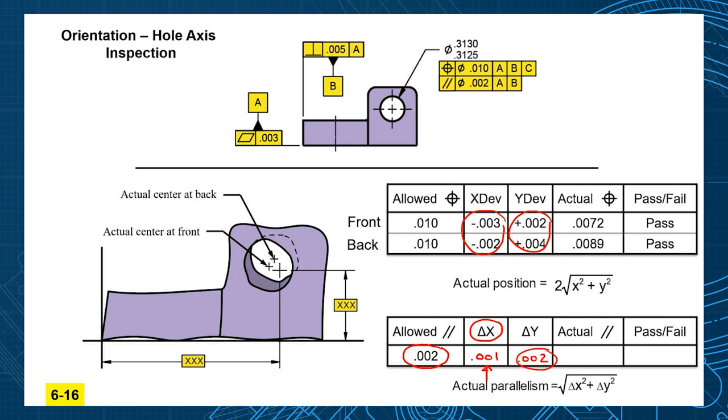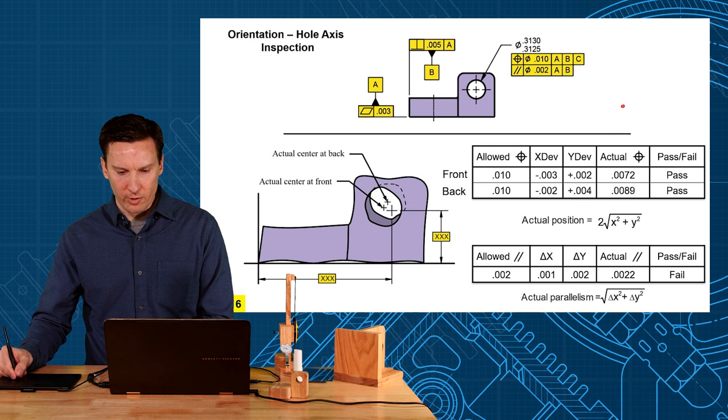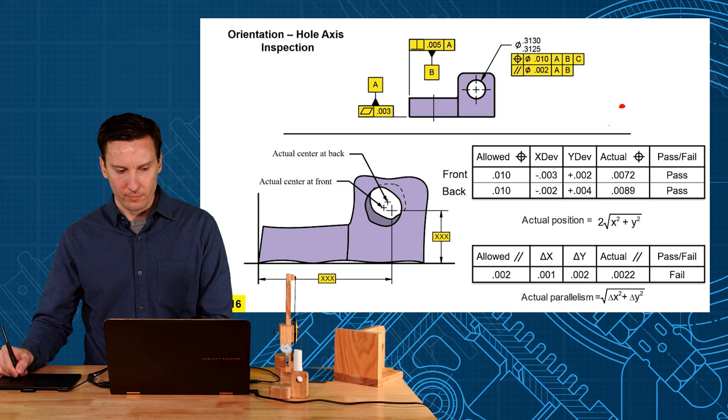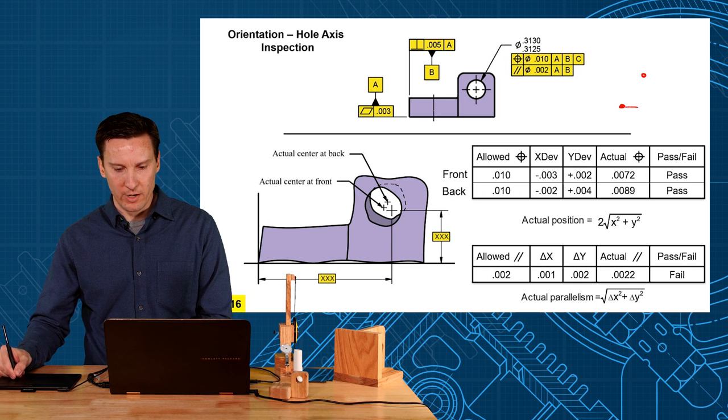To visualize that, your front of the hole is here. And the back of the hole is here. So we're measuring that x deviation, which is one thou, and that y deviation here is two thou. And we're trying to calculate this distance from here to here.